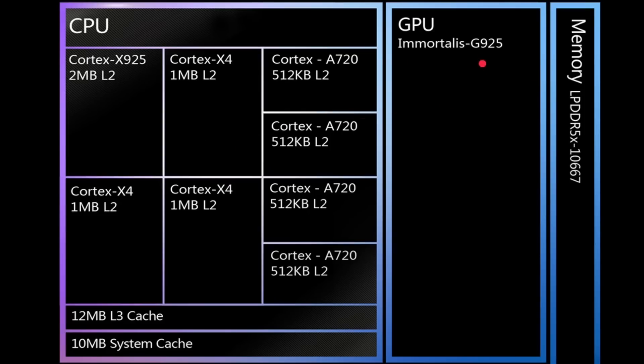On the GPU side you've got the Immortalis G925 — notice it's the same generation as the X925, that's the latest Immortalis GPU. Interestingly it's got the same number of cores as the previous one, which is a good thing. Generally these GPUs get better each year and manufacturers tend to reduce core count while maintaining performance, but this year they've kept the same number of cores, which means performance goes up.